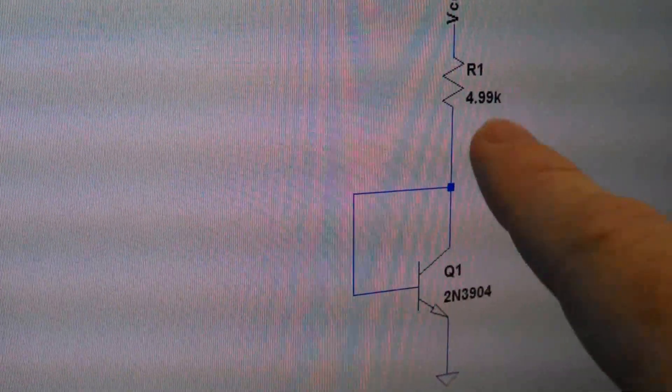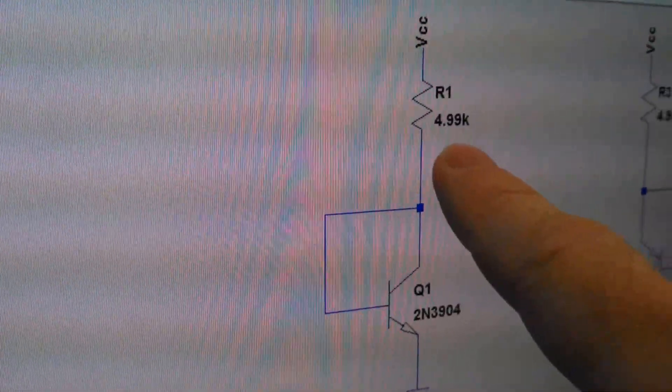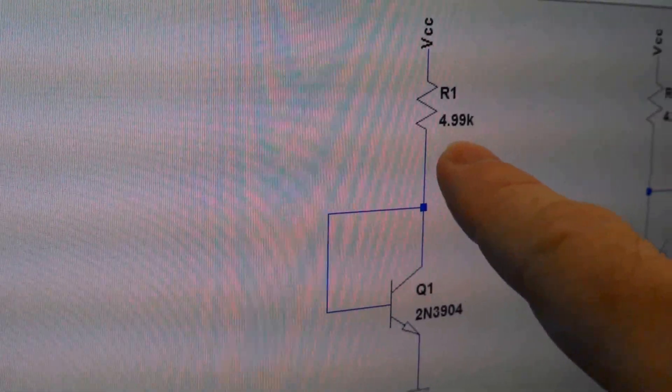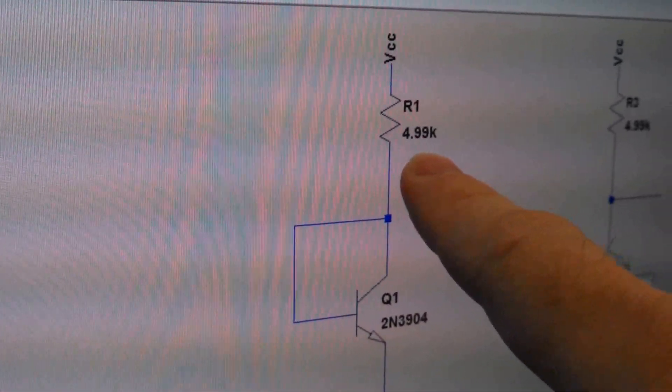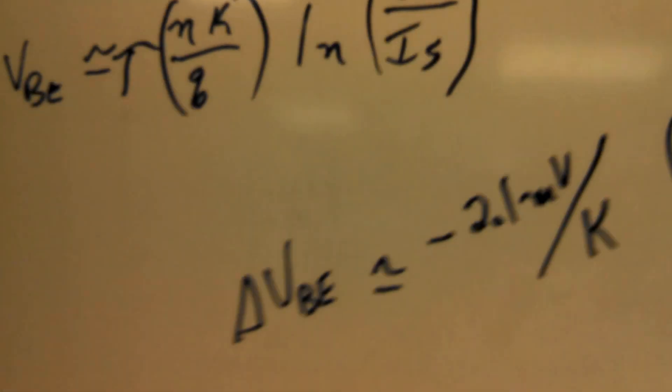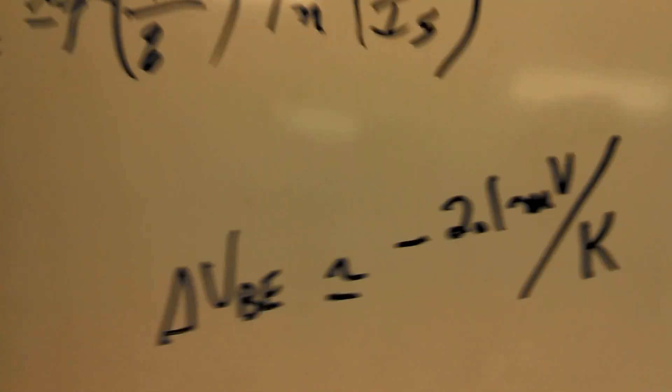But 5 volts minus 0.7 volts is 4.3 volts. 4.3 divided by 5k, for all intents and purposes, is about 500 microamps, if I remember right. I'm doing math in my head now, which is a dangerous thing.